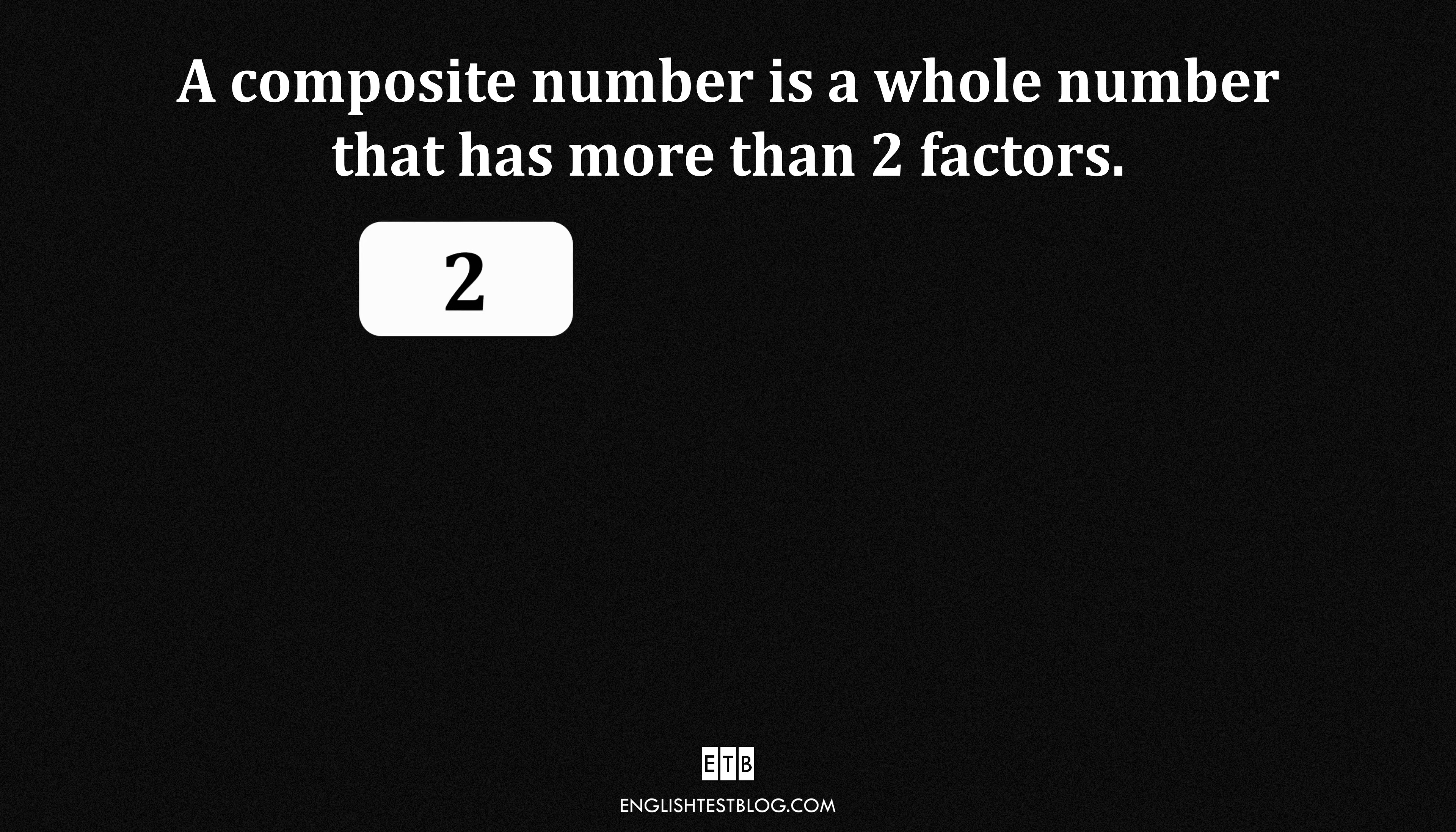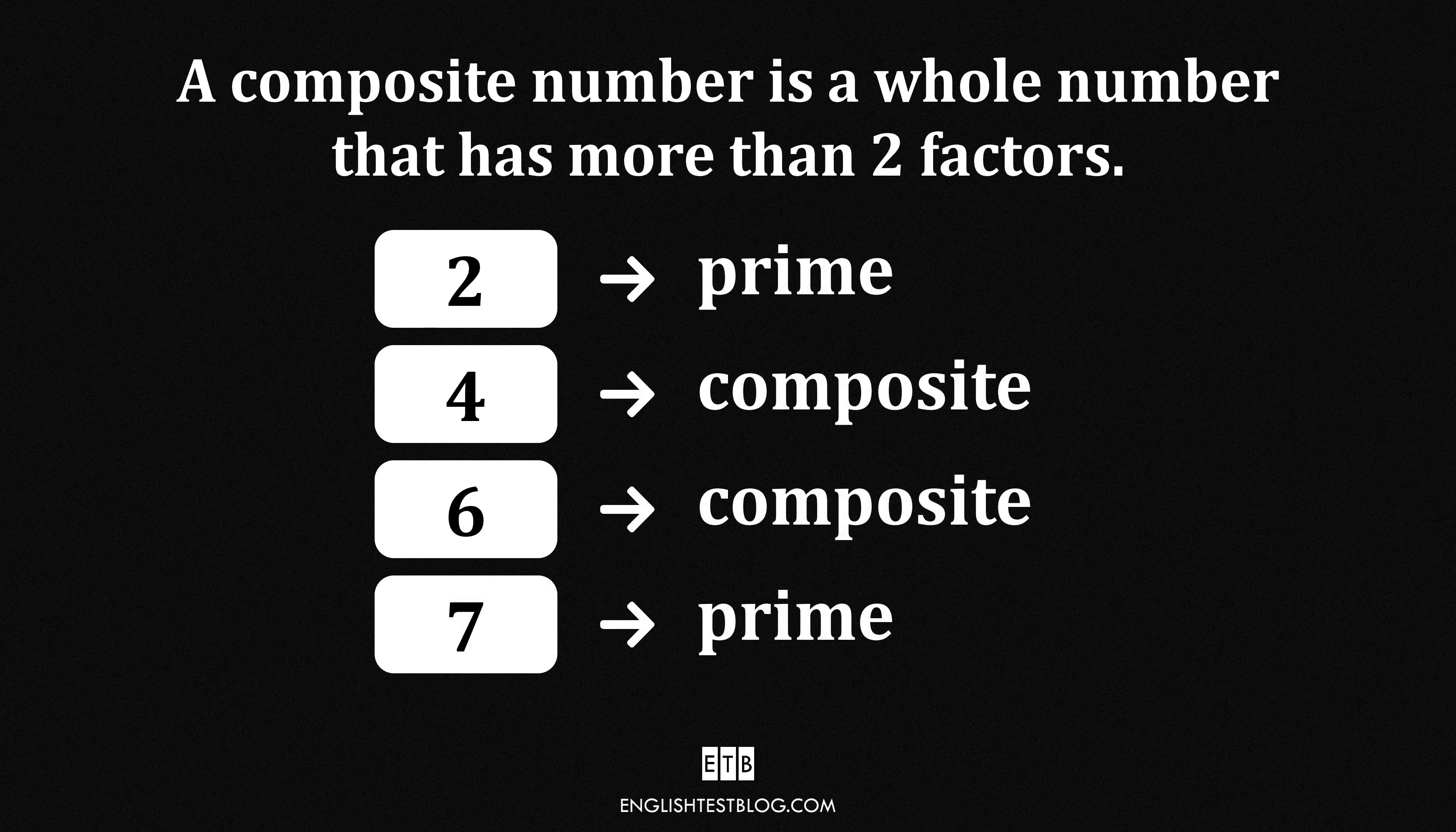To summarize, a composite number has more than two factors, while a prime number has only two factors, one and itself. And remember, 1 is neither prime nor composite.